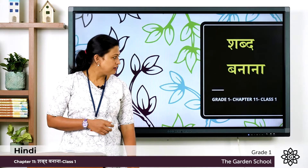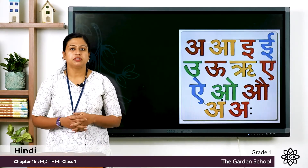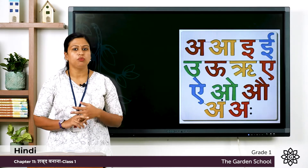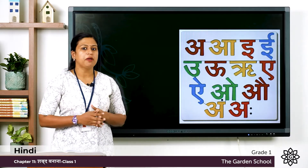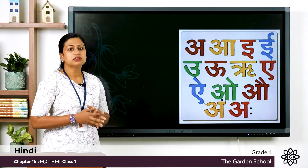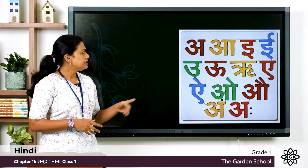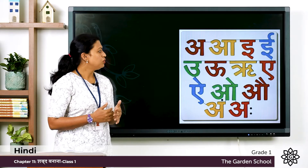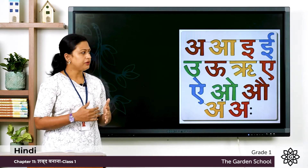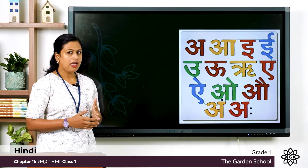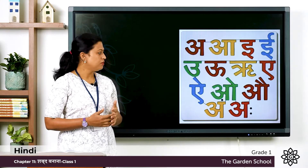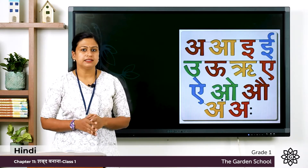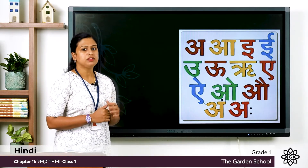But before that let's do a revision, because we have already completed the Swar letters and the Vyanjan letters. So you all remember, these are the Swar letters: A, Aa, E, Ee, U, Oo, R, A, Aa, O, Ao, Am, Ah. So these are the Swar letters and you have to write them in your notebook.